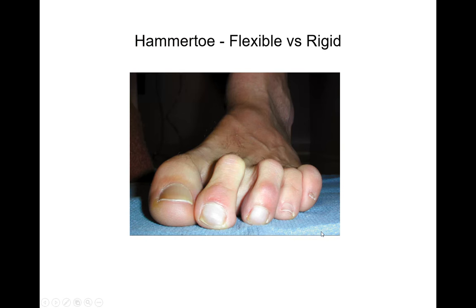One of the most important aspects of looking at your hammertoe is if it's flexible or rigid. The way you test that is you take the toe, and if you can straighten it totally out, it's a flexible hammertoe. If you can't straighten it, there's been arthritis that's developed in the joint — either one or both of the joints — and this is more of a rigid problem. When it becomes rigid, it rubs more on the shoes and can also rub on the tips, creating calluses or even sores or ulcers on the bottom of the tip of the toe.